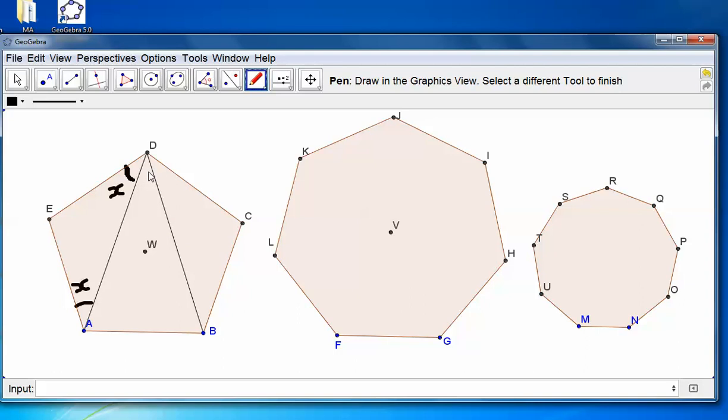And similarly, for DCB, because this is congruent to DEA, this is X, and this is X. And what I'll do here is I'll just call this Y. Which means this is Y.